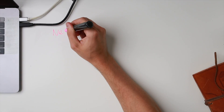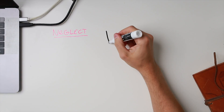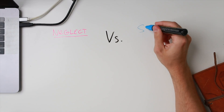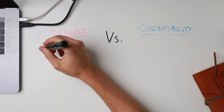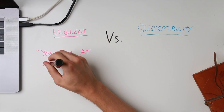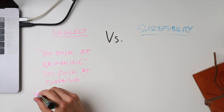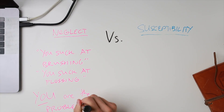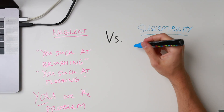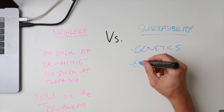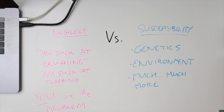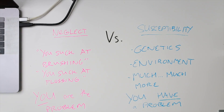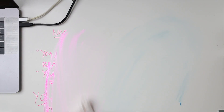There are two different schools of thought regarding cavity formation. One is neglect, and the more modern one — which is more correct — is susceptibility. Neglect was all about the fact that you were doing a horrible job taking care of your teeth; essentially, you are the problem. With susceptibility there's a whole lot more going on: your genetics are at play, environmental influences, and much more. So with susceptibility, it's more that you have a problem rather than you are the problem, and this is what we believe today.